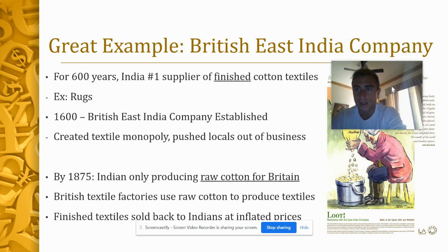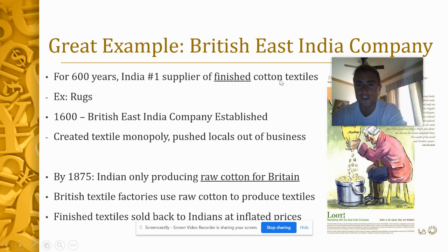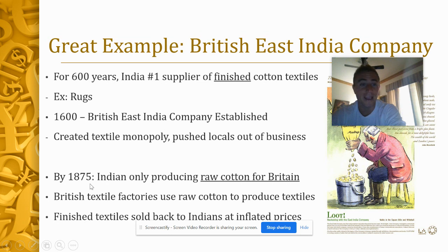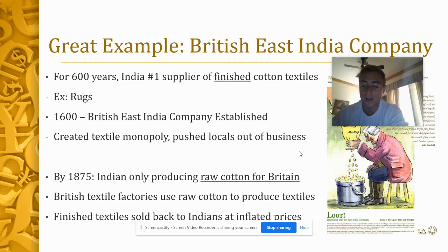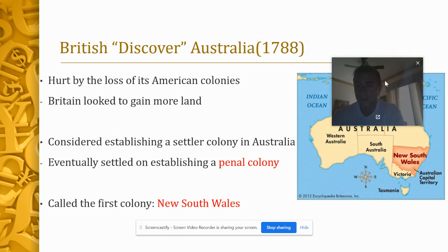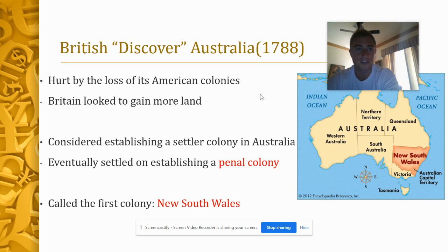This was a transformation from economic imperialism to direct control of India, lasting from 1858 to 1947 — called the British Raj. This is a great example of the effects of imperialism. India had been the number one producer of finished cotton textiles — rugs, blankets, clothing — for 600 years. The British East India Company created a textile monopoly, pushed the locals out of business, and by 1875 Indians were only producing raw cotton. The British would then process that cotton in textile mills and sell the finished goods back to Indians at inflated prices — completely crippling the Indian economy for the benefit of Britain.